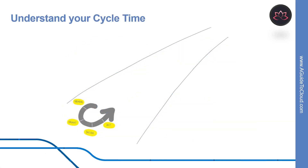Let's start with a basic assumption about software development. I will describe it with OODA — which stands for Observe, Orient, Decide, and Act loop. This was originally designed to keep fighter pilots from being shot out of the sky.